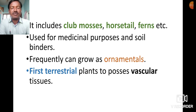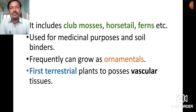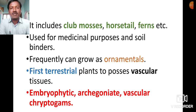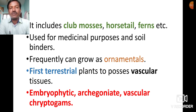Pteridophytes are the first terrestrial plants which have vascular tissues, so they are also called tracheophytes. They contain xylem and phloem. Pteridophytes are embryophytic archegoniate vascular cryptogams. Embryophytic means they contain an embryo; archegoniate refers to the female sexual organ; and cryptogams means non-flowering plants.